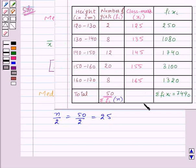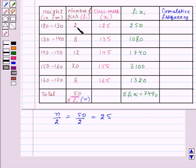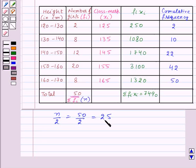Now let us find out the cumulative frequencies. The cumulative frequency for the first class will be 2. Then 2 plus 8, that is 10. Now 10 plus 12, that is 22. Now 22 plus 20, that is 42. And lastly, 42 plus 8, that is 50. The cumulative frequency which is greater than and nearest to 25 is 42. So the median class will be 150 to 160.